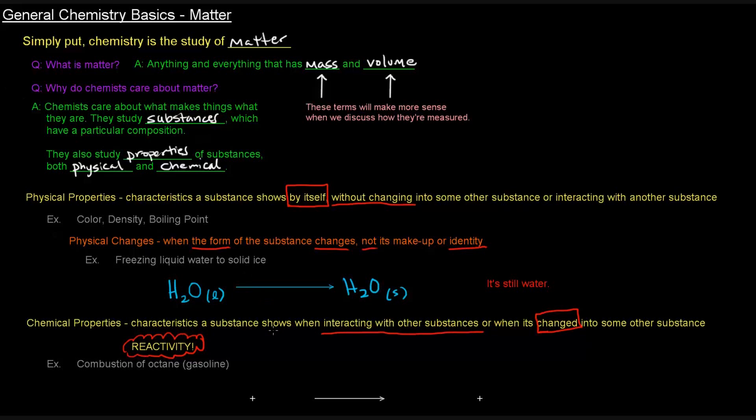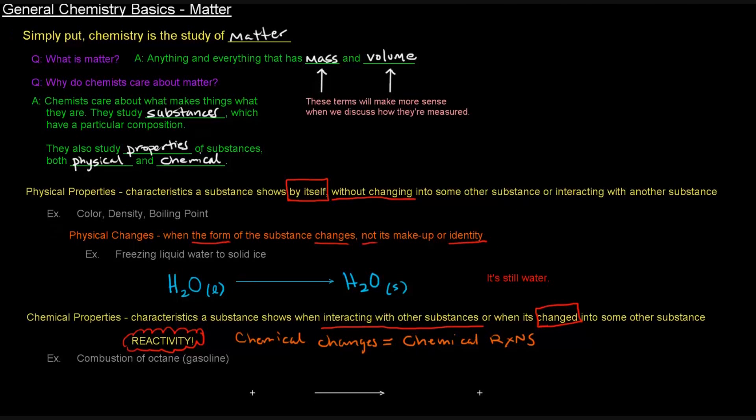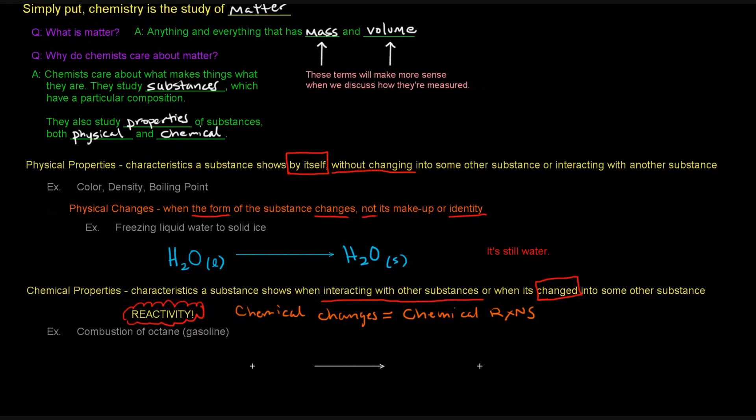And there are, of course, chemical changes as opposed to physical changes. And chemical changes have another name. Really, they're called chemical reactions. And so we're talking about when one substance interacts with another substance and changes to some other substance. It doesn't even have to interact with something necessarily, as long as it changes its substance. But I think pretty much all the time it's interacting with something else.